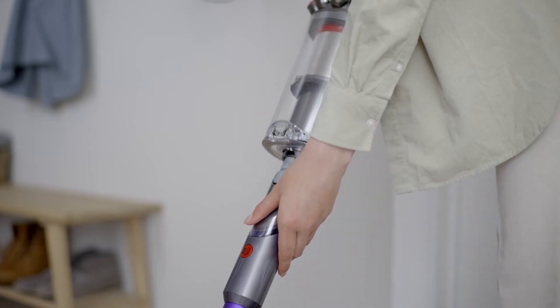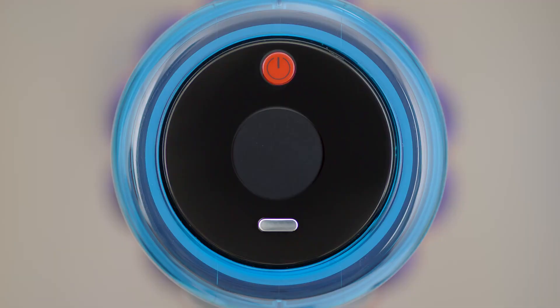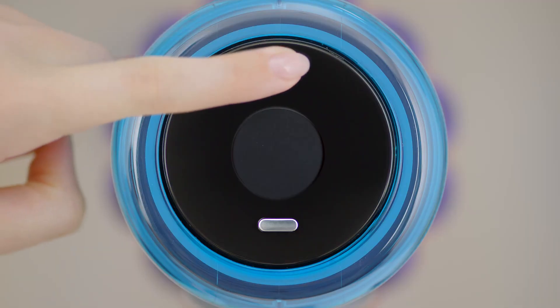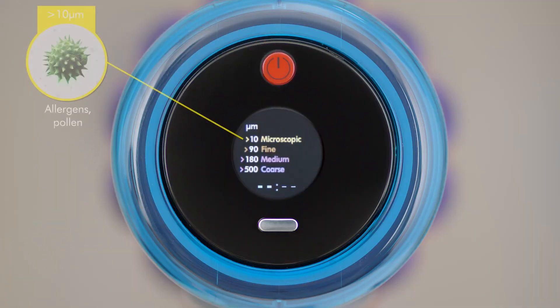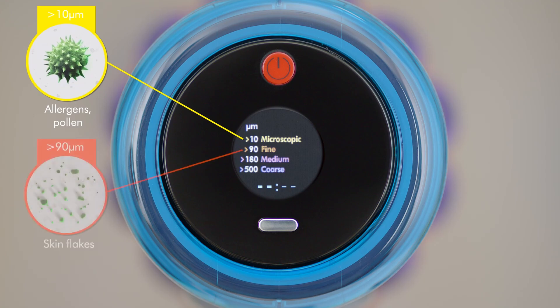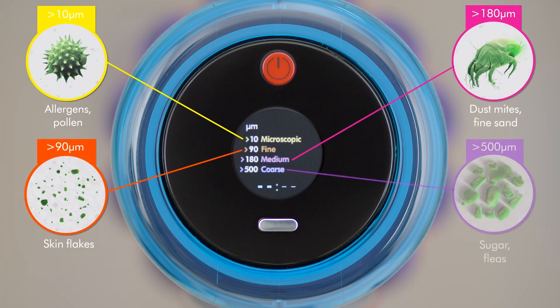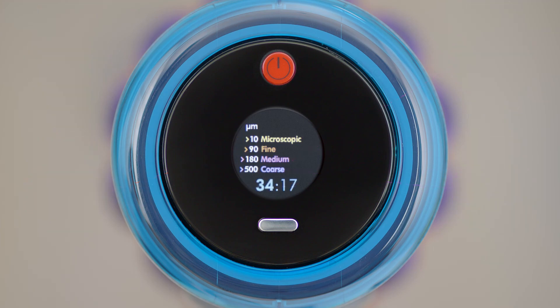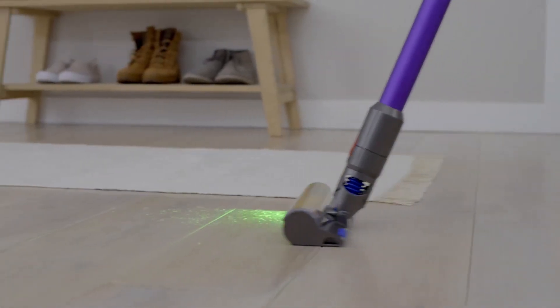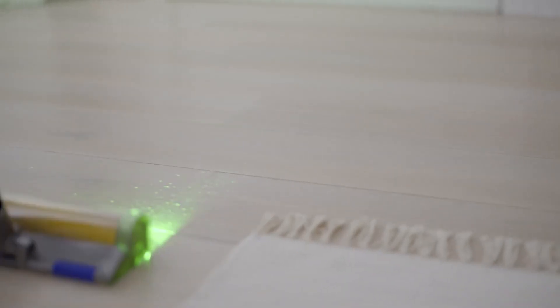The Gen 5 Detect employs Dyson's advanced filtration system, capturing 99.99% of particles as small as 0.3 microns, ensuring that your home remains free from allergens and dust. A notable feature of the Dyson Gen 5 Detect is its innovative laser dust detection technology. This feature illuminates hidden dust on hard floors, allowing users to see areas that may need additional cleaning.